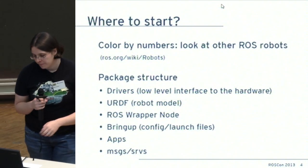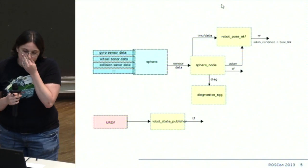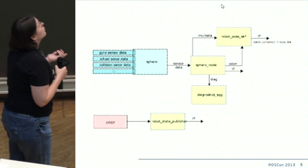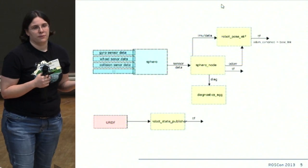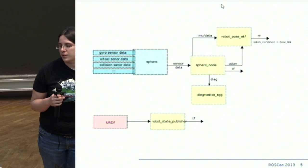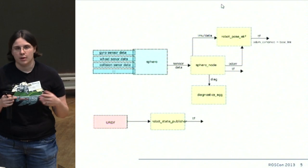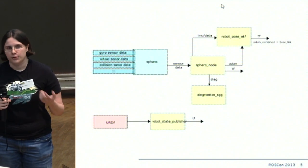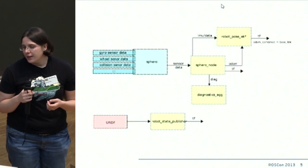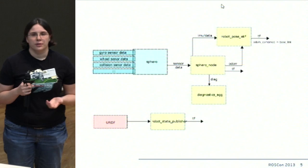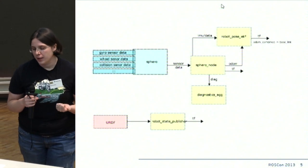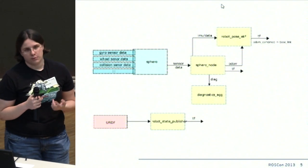This is what the nodes look like for Sphero. Sphero is a very simple robot — all you need is the driver and a ROS wrapper around it, a URDF which is pretty simple because it's a ball, and a couple of other tools in ROS: robot_pose_ekf and diagnostic_aggregator.